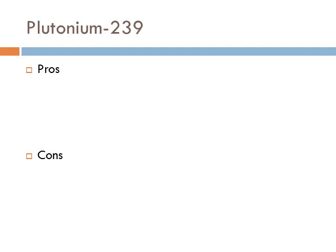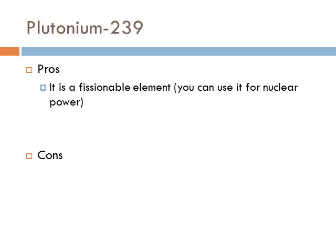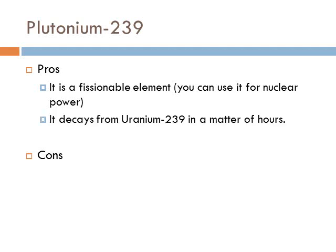There are pros and cons to plutonium-239. Pros include: it is fissionable, so it can be used as reactor fuel; it creates three extra neutrons when split, similar to uranium-235; and it decays relatively quickly. Also, since uranium-238 is already inside the reactor, you naturally produce plutonium-239 as you fission uranium-235, meaning as you use fuel, you continually make more usable fuel.